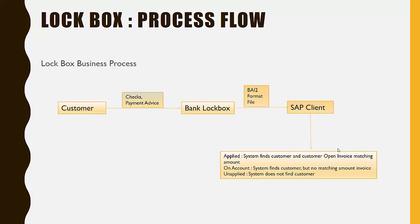This electronic file, which uses the BAI2 file structure, is sent electronically by the bank to the company. The company's SAP system receives this file and automatically posts it in the system. Once posted, the bank account gets debited with the amount customers have sent and customers' open invoices are cleared. The whole process is automated through the Lockbox process.